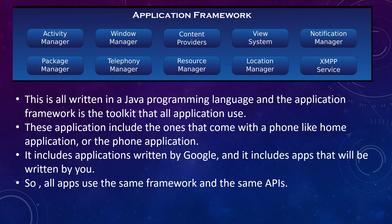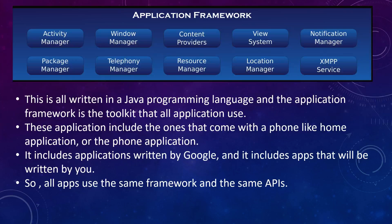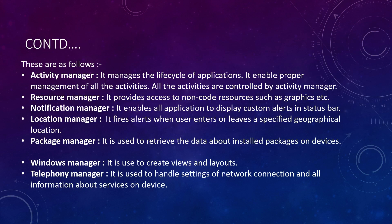The application framework layer contains the Activity Manager, Window Manager, Content Providers, View System, Notification Manager, Package Manager, Telephony Manager, Resource Manager, Location Manager, and XMPP Service — all written in Java. The application framework is the toolkit that all applications use, including built-in phone apps, apps written by Google, and apps written by developers. All applications use the same framework and the same APIs.